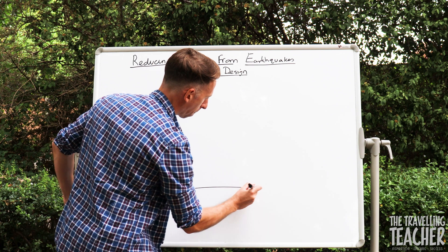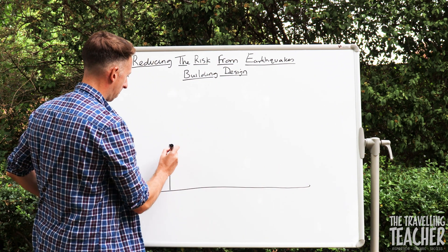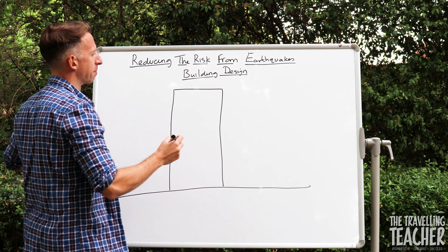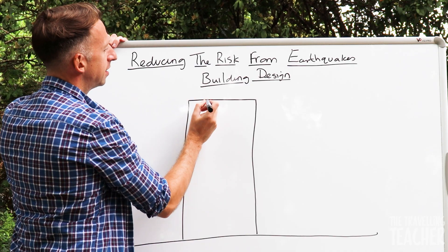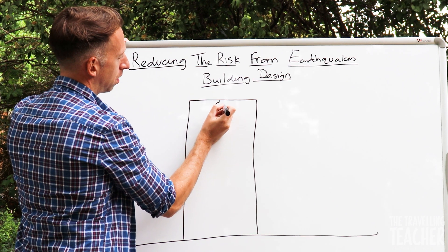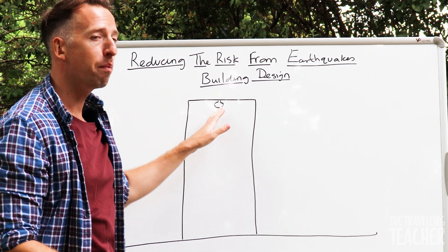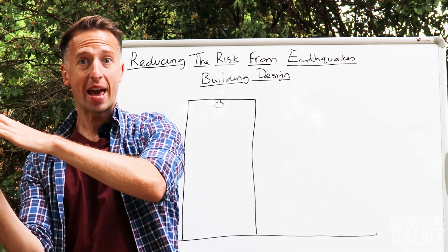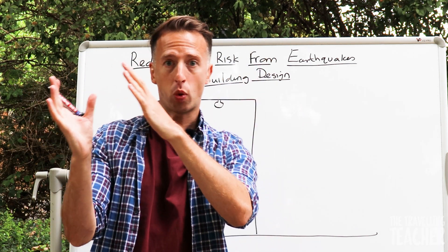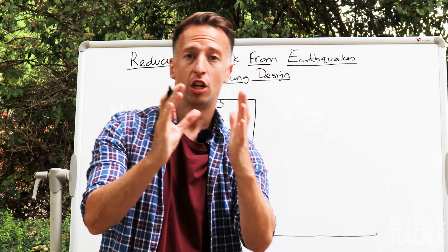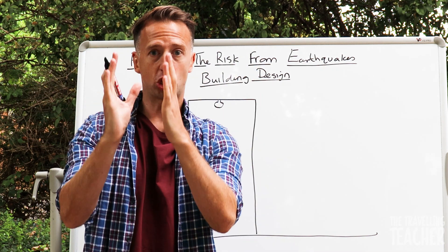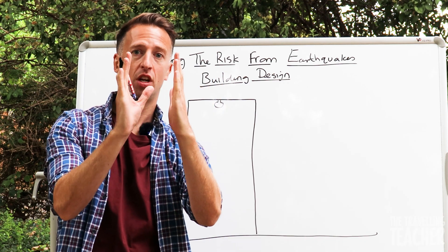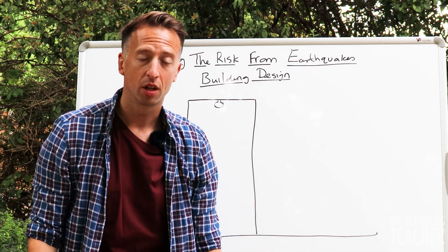Here's ground level — let's draw a big building. The first thing that we can have on our buildings is a pendulum in the roof. The idea of this pendulum is that if there's an earthquake and a building sways one way, the pendulum is going to act as a counterbalance and sway the opposite direction to stop the building from swaying and make sure it stands still. So the building goes right, the pendulum goes left, acting as a counterbalance to make sure the building remains standing.